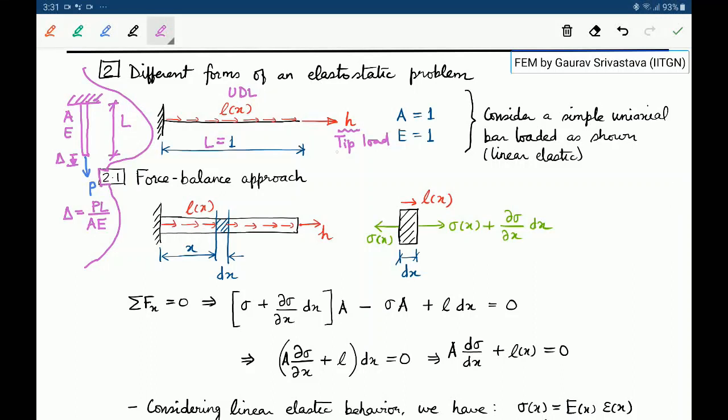Just to clarify, the tip load will typically have units of Newtons and the UDL will have units of Newtons per meter. So UDL is like a body force in a way. And we have also assumed that the area of the bar and the Young's modulus of the material are also 1. If we were doing things in SI units then length will be in meters, area will be in square meters, E will be in Pascals and so on.